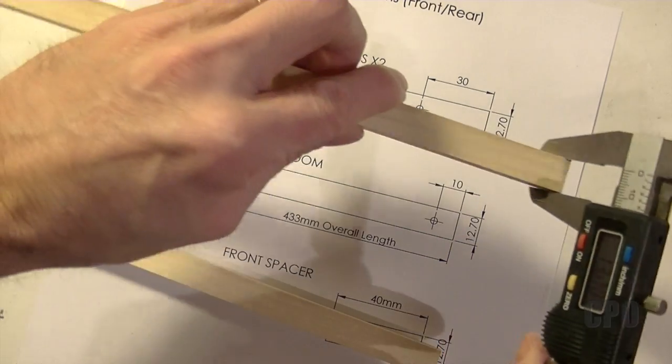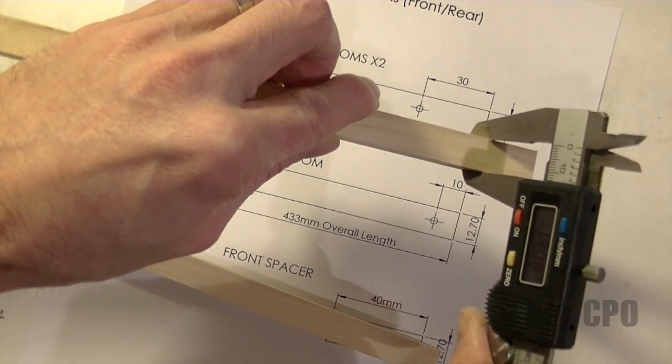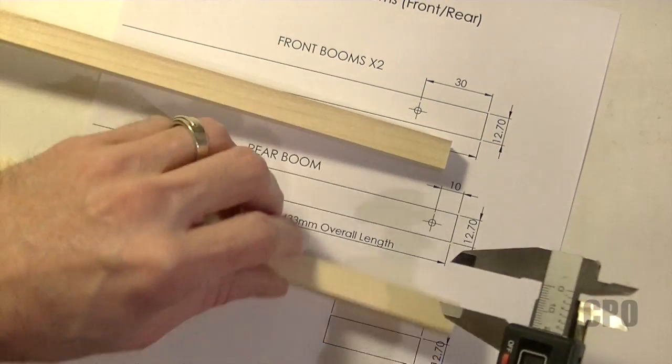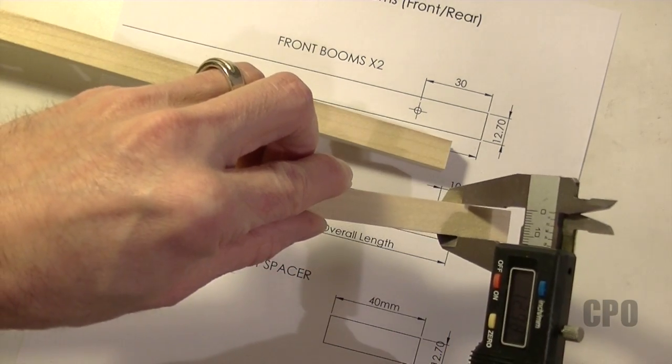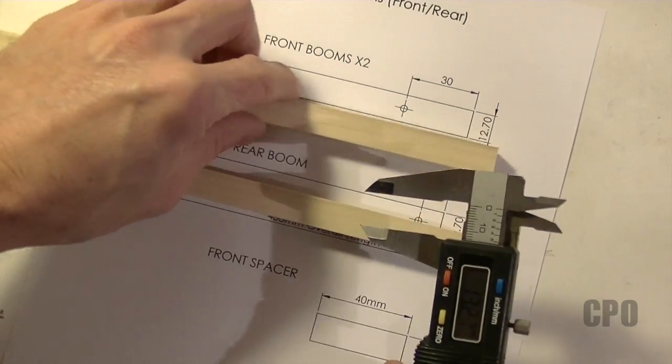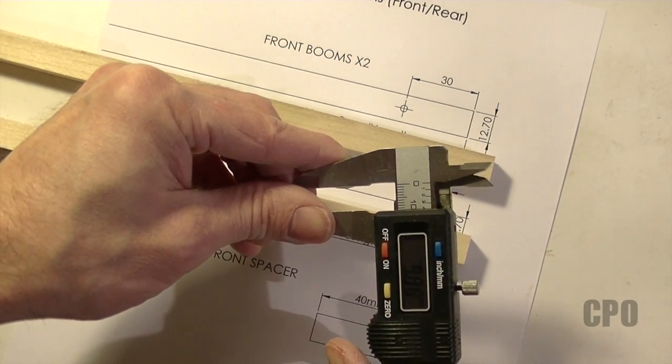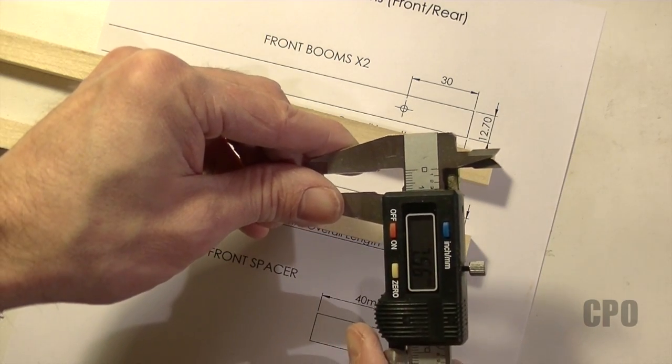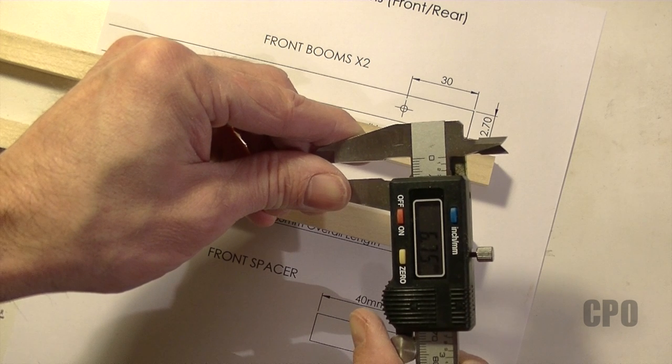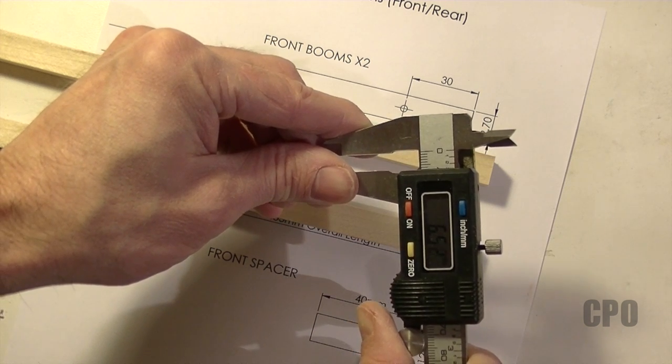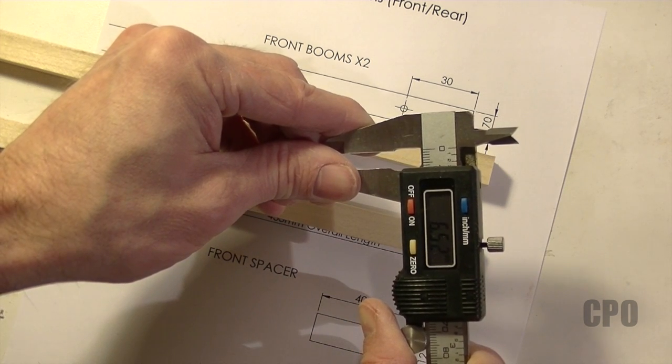Now I need to drill the holes on the front booms, and I do it the same way I did the rear booms, which is measure the nominal width of the booms, which is somewhere between 12.8 and 13 millimeters, and then basically set the caliper to half of that distance.